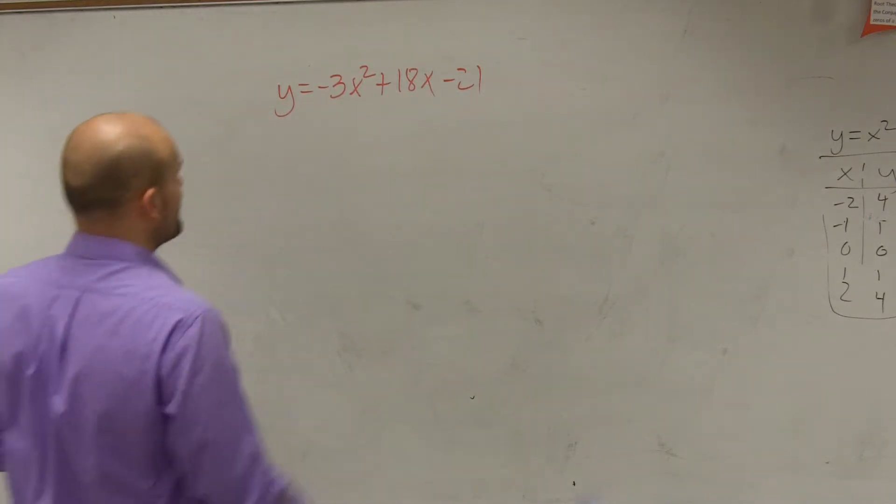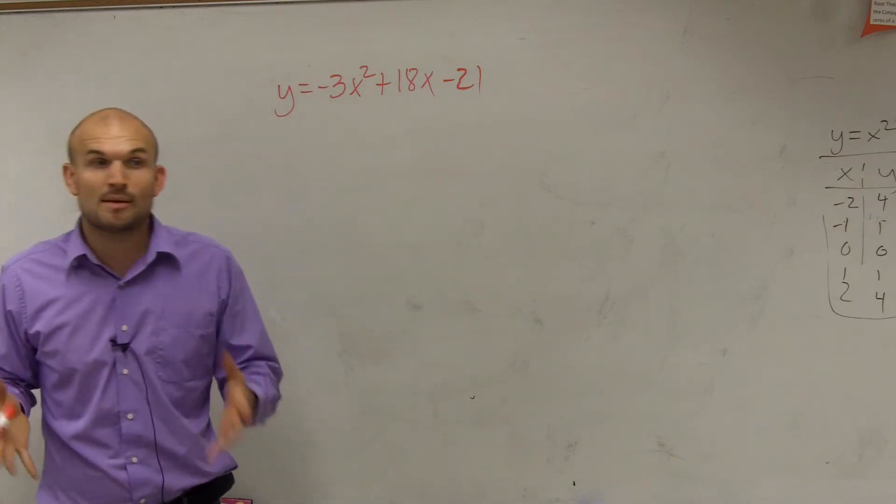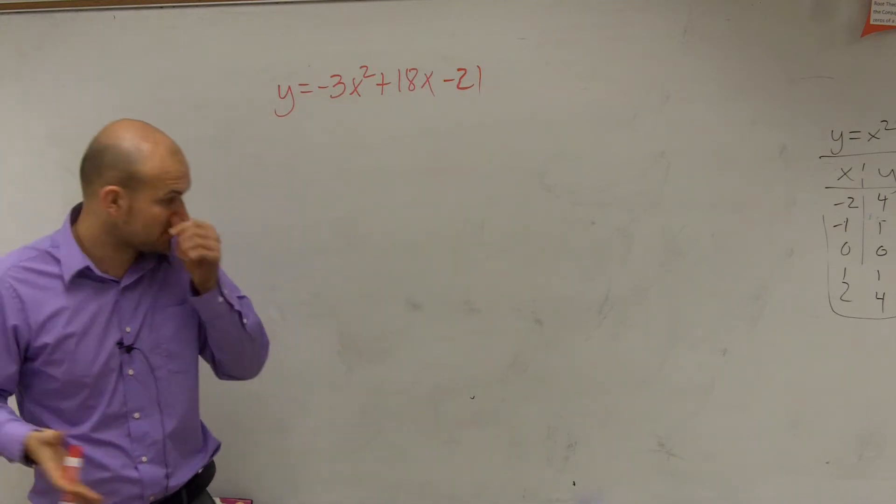All right, so to write this into vertex form, this is negative 21. To write this into vertex form, remember guys, we have to complete the square.